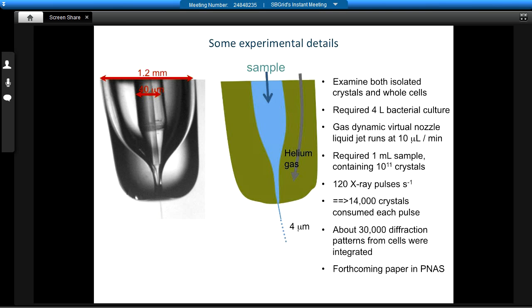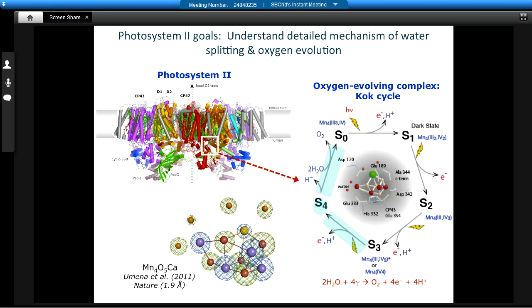For this type of experiment, the samples are delivered to the x-rays with a liquid jet focused by a sheath of helium gas. The samples go in at a fairly high clip, 10 microliters per minute. If you do the math on this, we use one milliliter of sample—that's 100 billion crystals altogether at a rate of about 120 pulses per second. So if you do the math on that, actually 14,000 crystals were consumed with each pulse. So it's actually a very wasteful technique. In the end, we took 30,000 diffraction patterns from these cells and integrated the data. There's a paper coming out soon in PNAS. So that's all I'll say about this project for now.